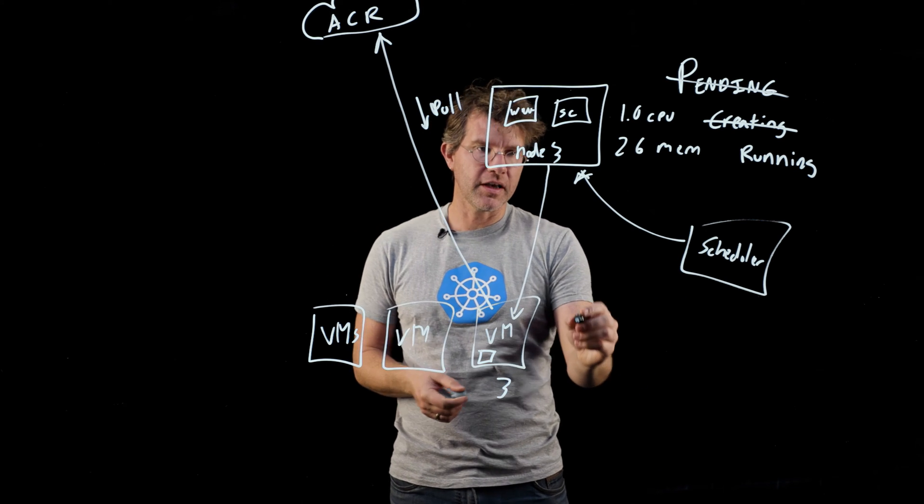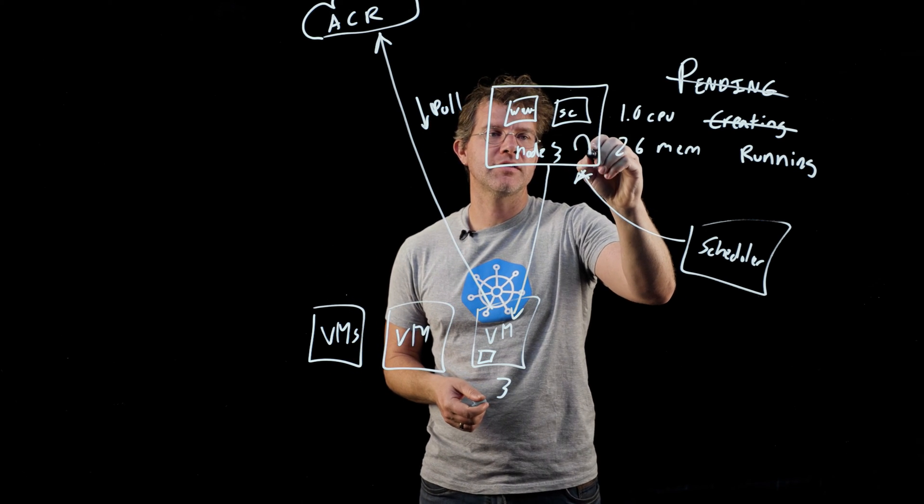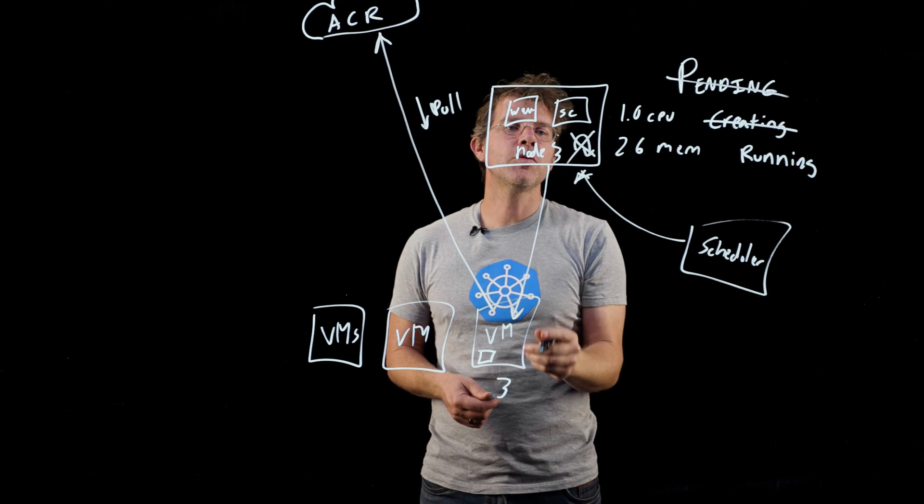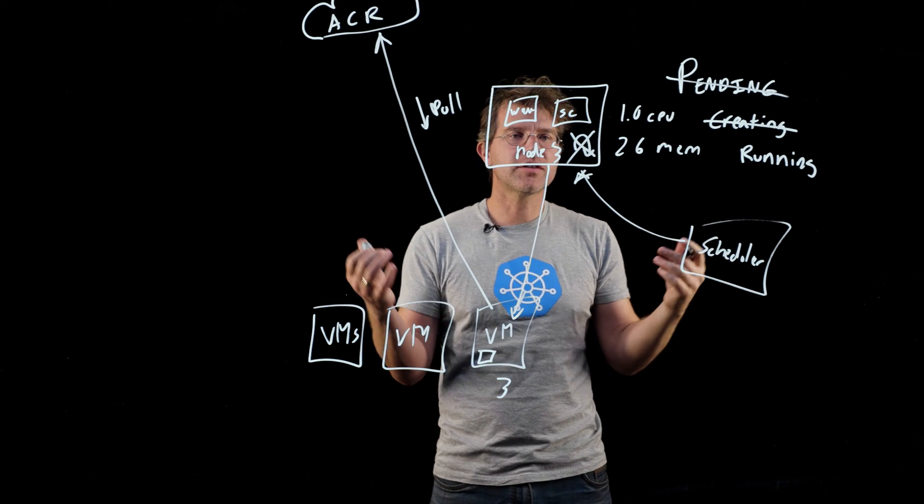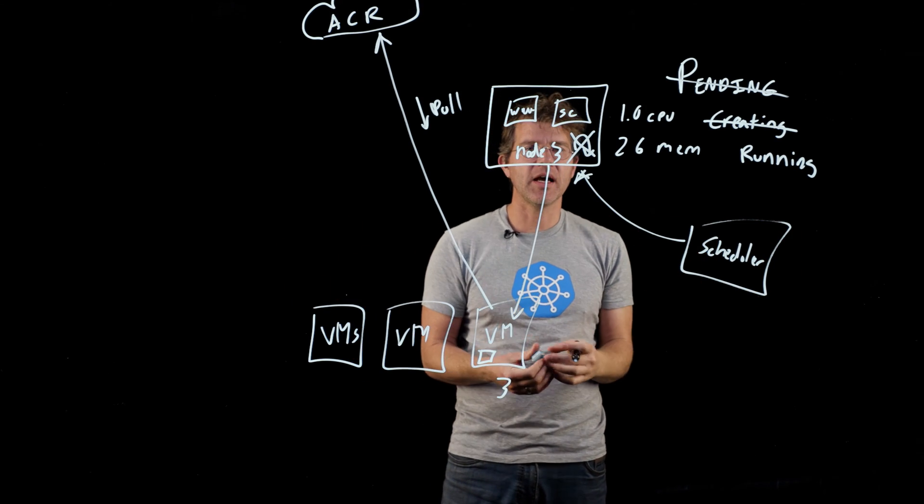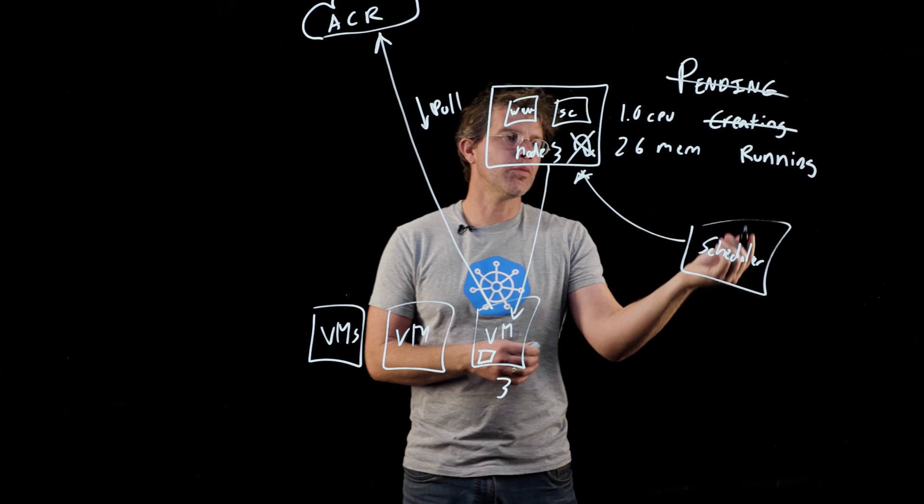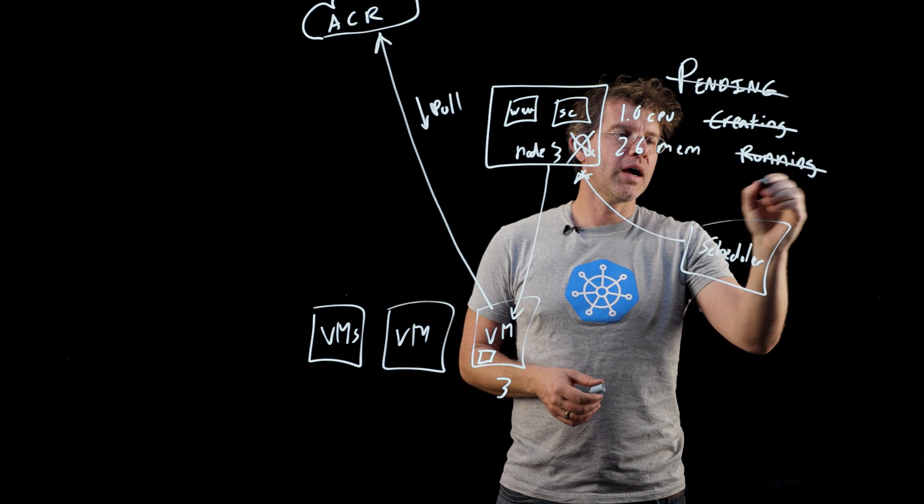So we have a process running inside this container. If it happens to crash, Kubernetes is going to restart it. And so when it restarts, if it restarts too many times, your pod can go into a state that's called CrashLoopBackOff.